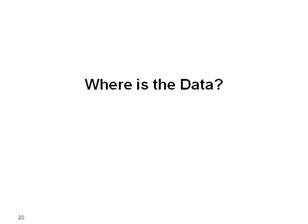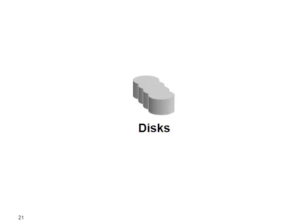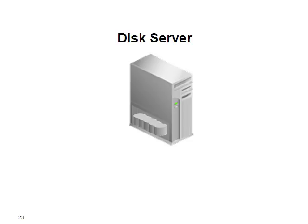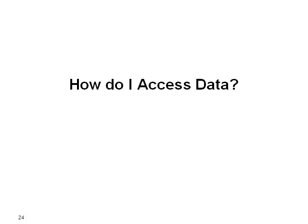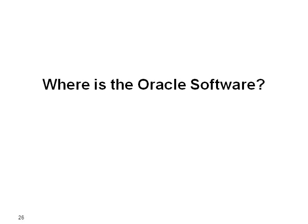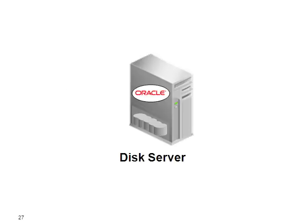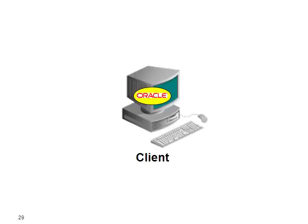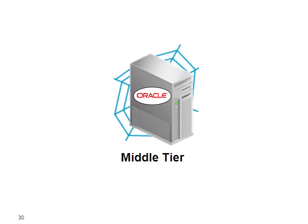So where is the data? Located on disks obviously. And where are the disks? On a disk server. So how do I access data? Using the Oracle software. The first thing you need to do is to install that Oracle software. So the question is: where is this software located? Well it can be on the disk server itself, it can be on a server on its own with the database residing somewhere else, it can be on the client — typically your desktop — or it can be in the middle tier.